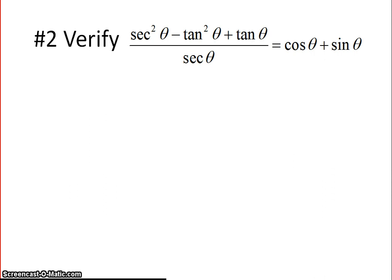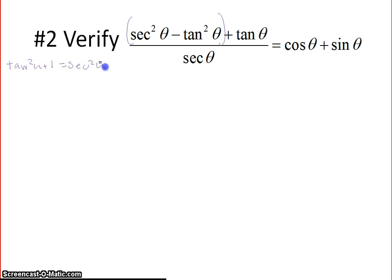Problem number 2 — the ugly side is the left-hand side again, so we are going to change the left-hand side to make it look like the right-hand side. Whenever you see a trig identity squared, you should look at the Pythagorean identities. You can see on your list that tangent squared u plus 1 equals secant squared of u.